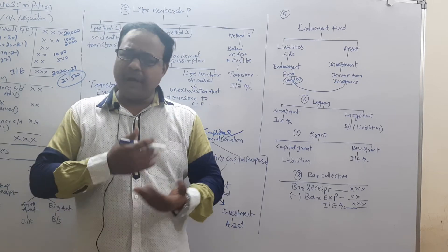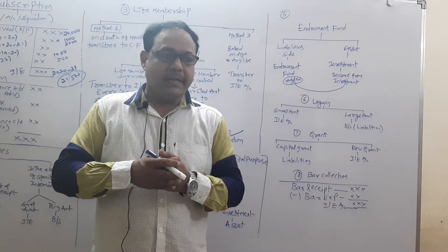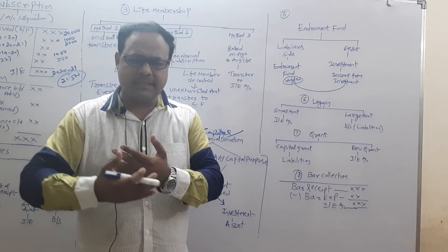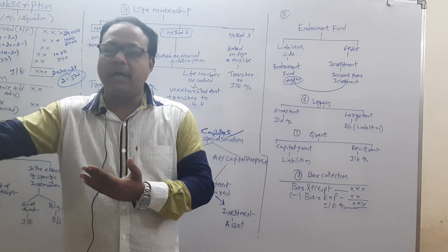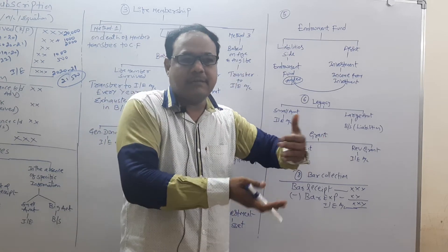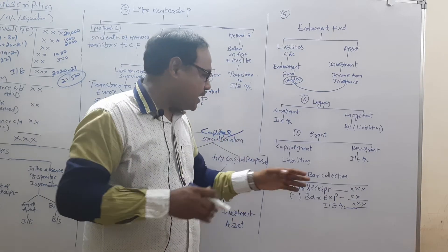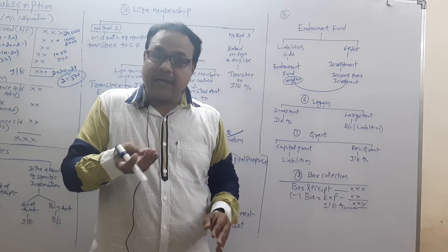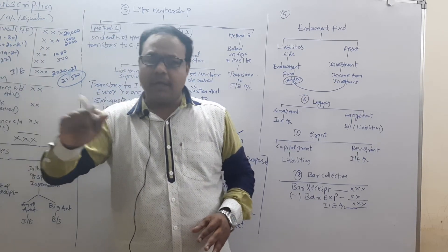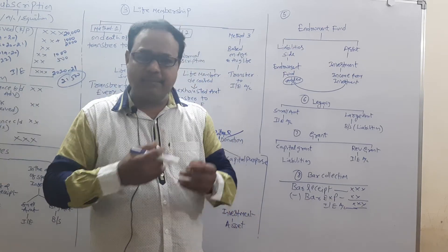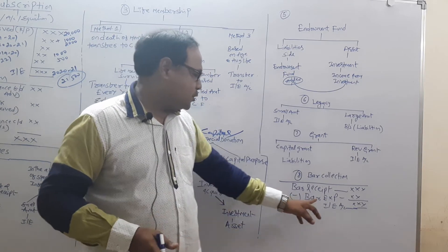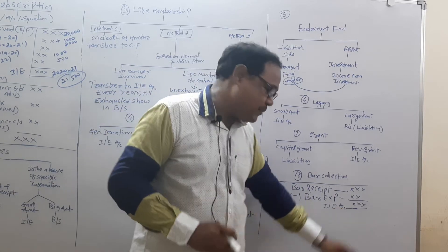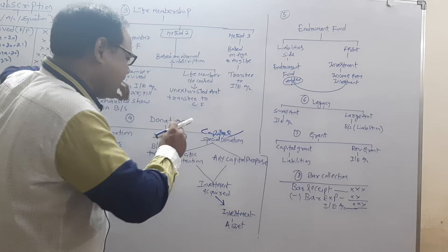Bar collection refers to receipts from a bar facility run alongside a health club or recreational club — for example, from sale of food, drinks, or other items. From bar receipts, deduct bar expenses; the balance amount is transferred to the income and expenditure account.